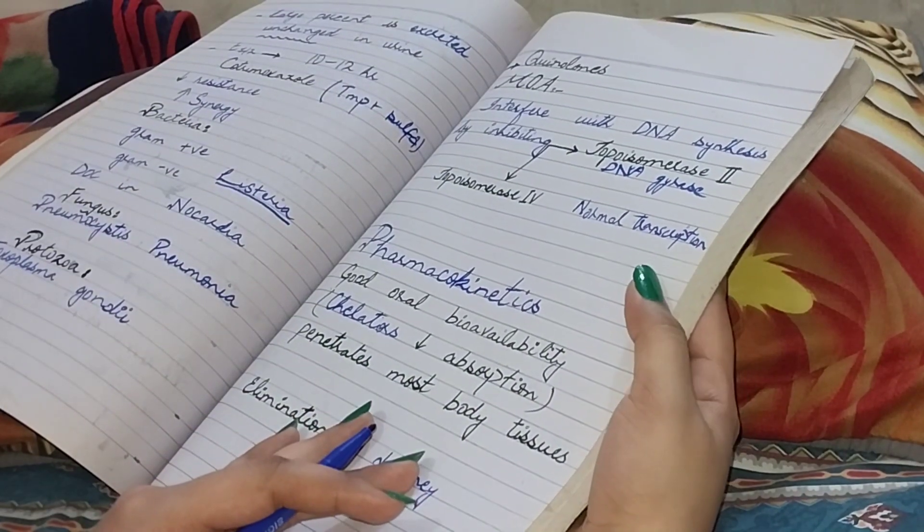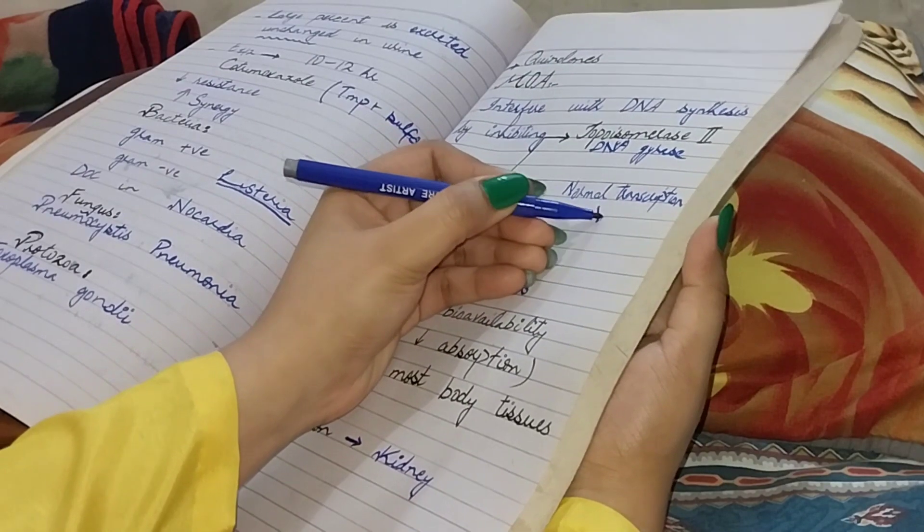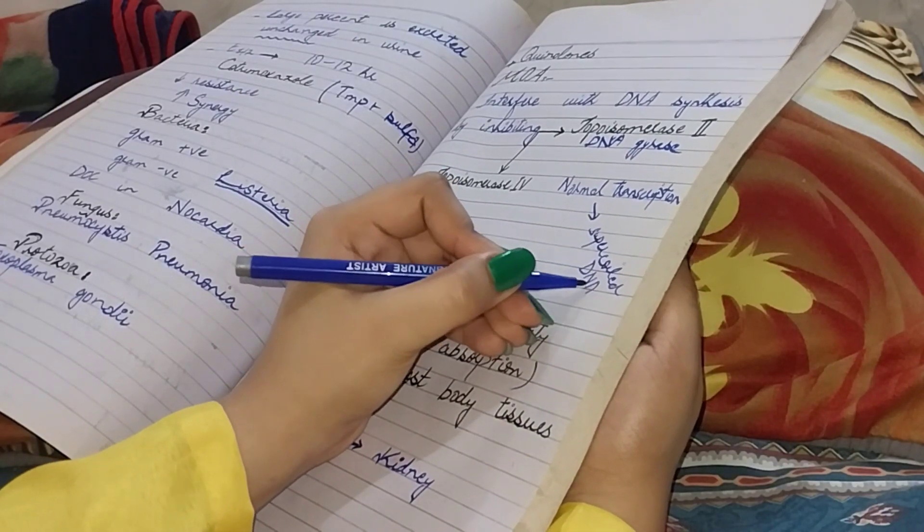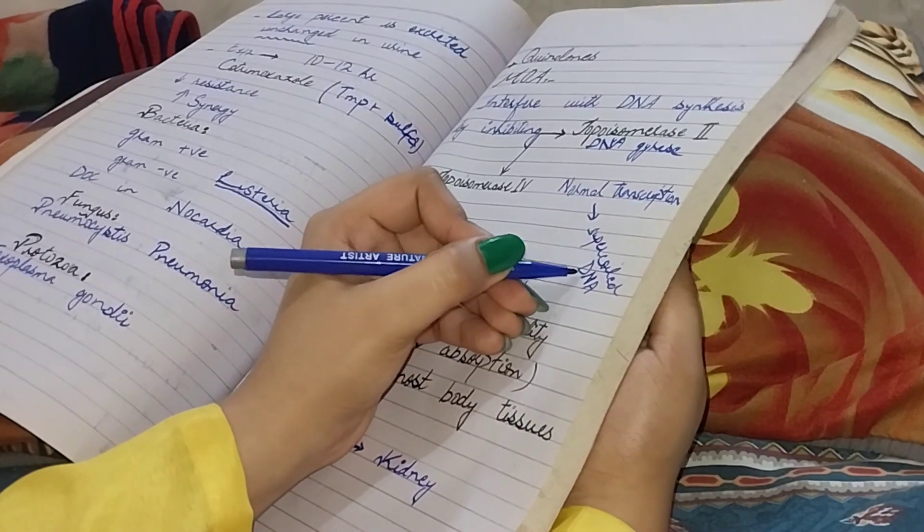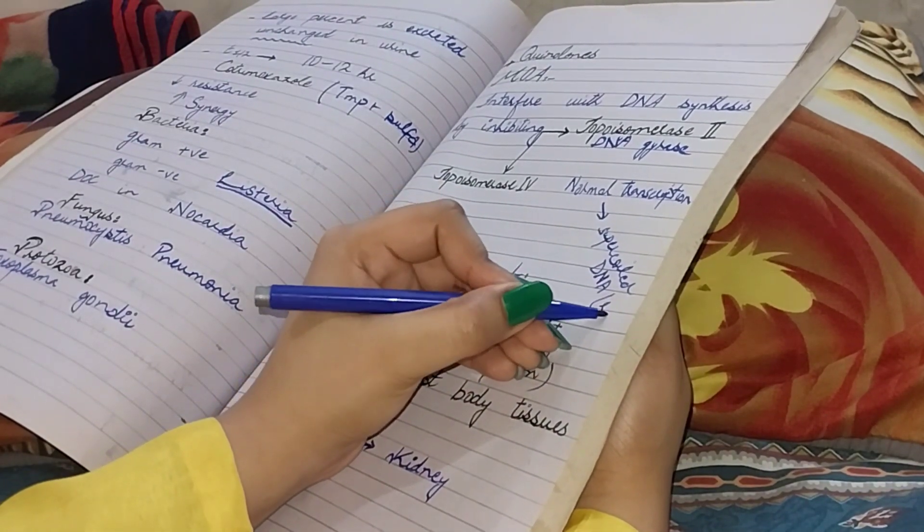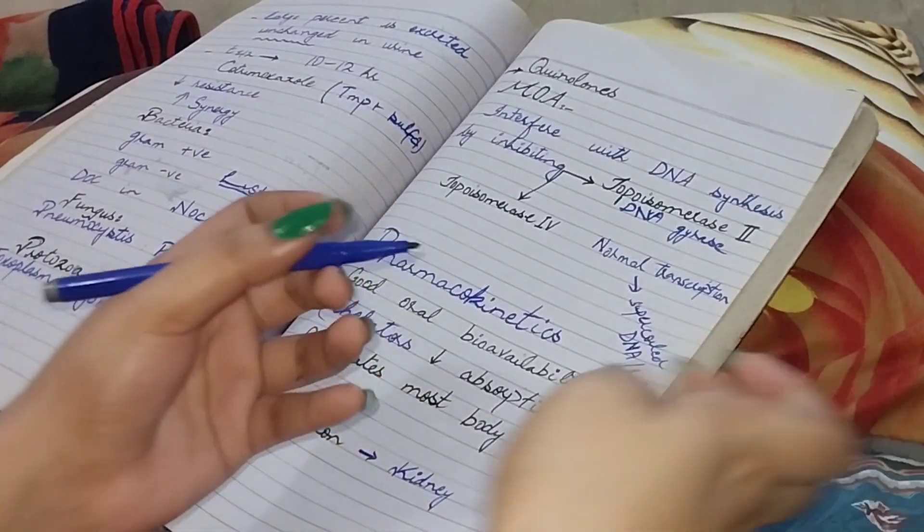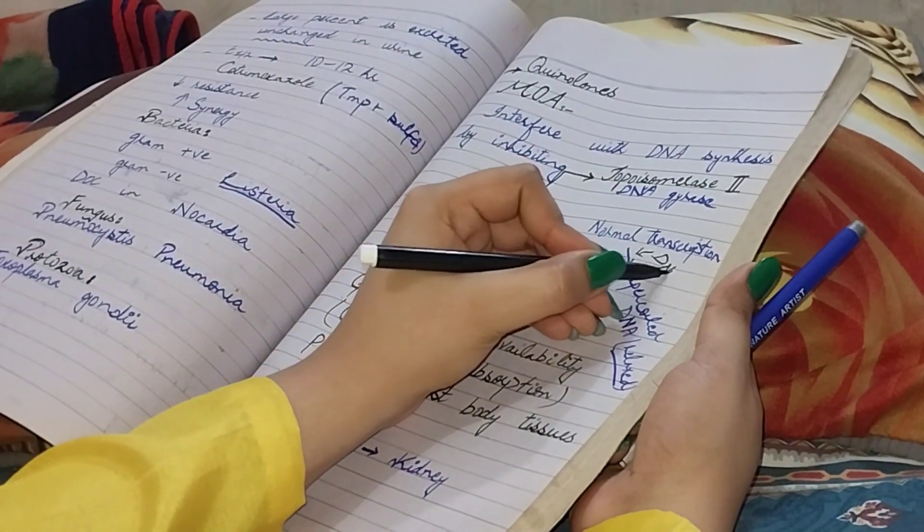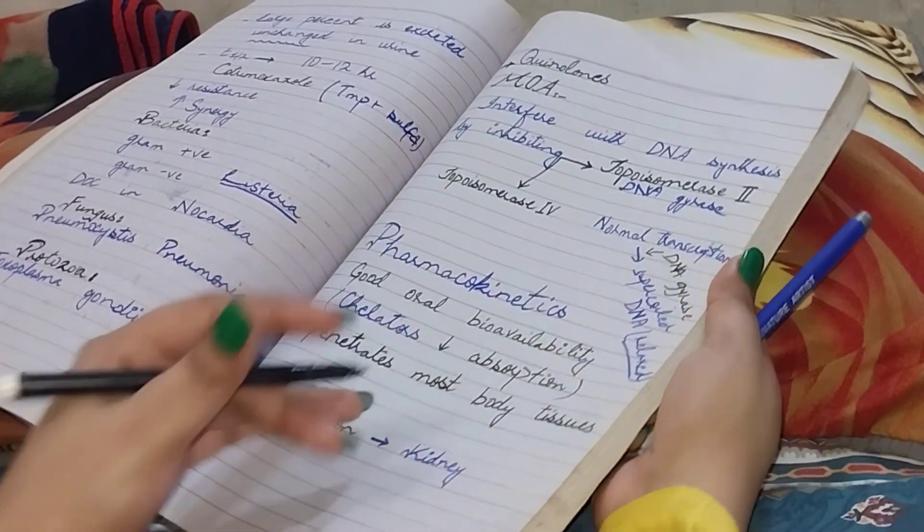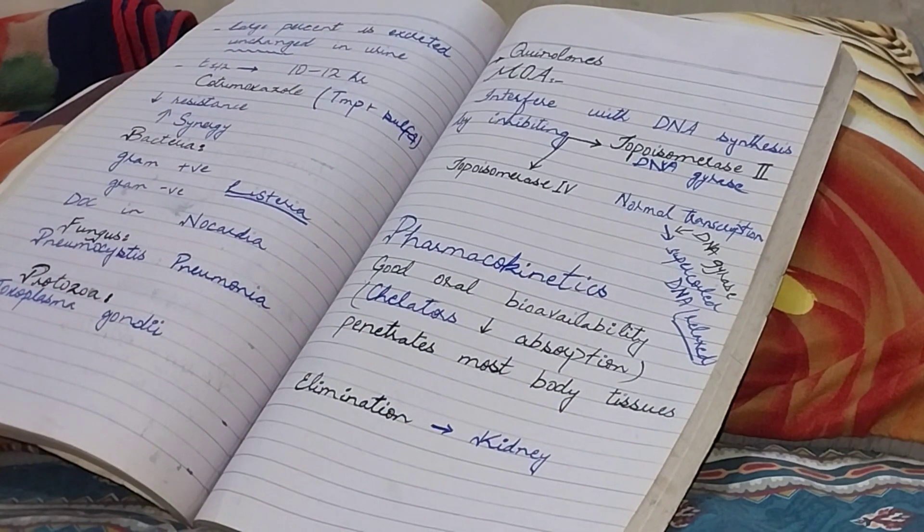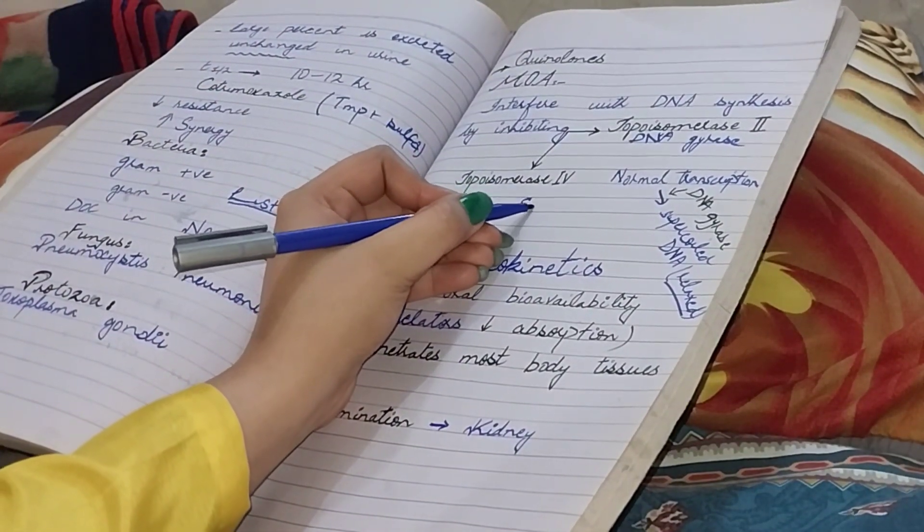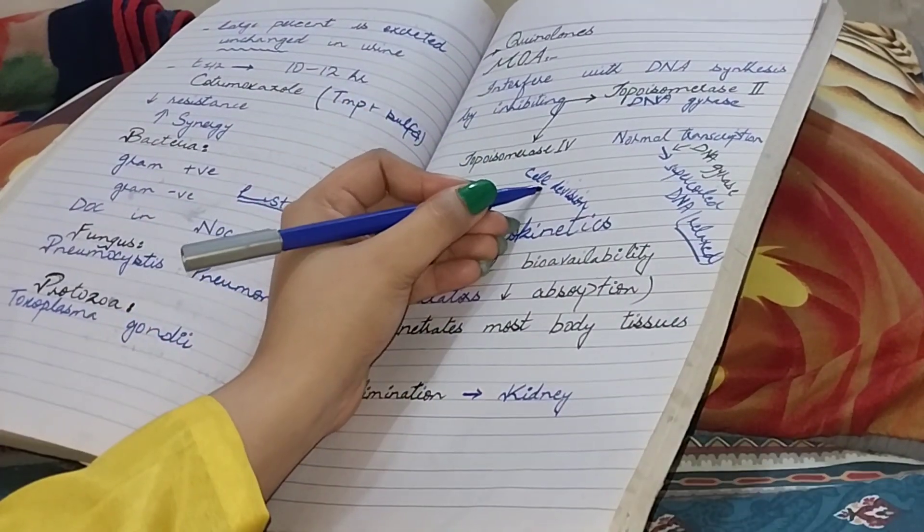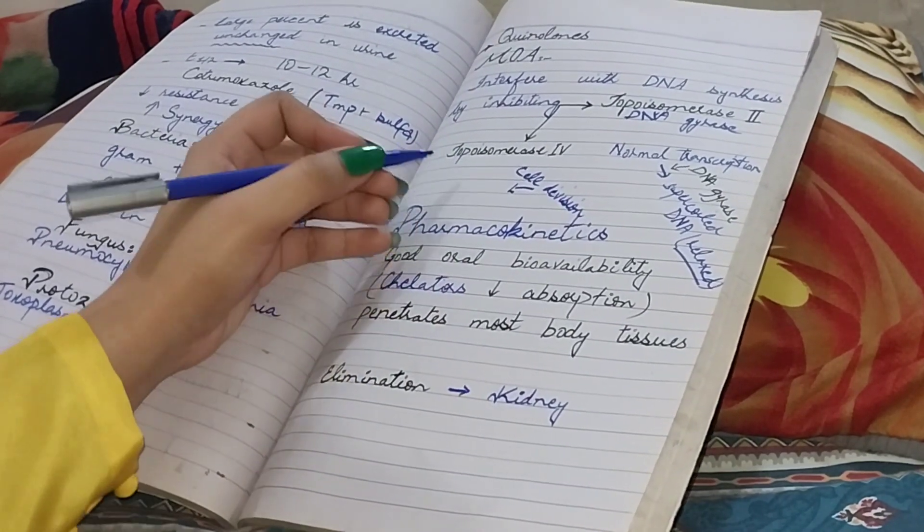For normal transcription and duplication, supercoiled DNA has to relax, which is catalyzed by DNA gyrase.